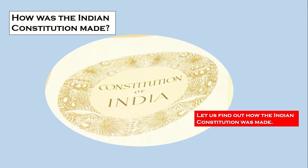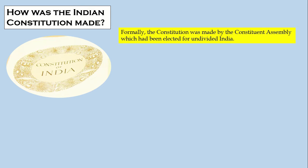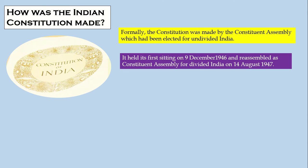Welcome to this section. The Indian Constitution was made by the Constituent Assembly, which was elected for undivided India — that is, before India and Pakistan were partitioned. The main duty of the Constituent Assembly is to draft a constitution for a country. In India, the Constituent Assembly had its first meeting on 9th December 1946.